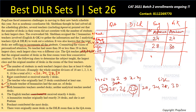From hint nine, there were originally more desks in the DILR room than in the QA room. The remaining desk values are 25 and 26. So DILR has 26 desks and QA has 25 desks.